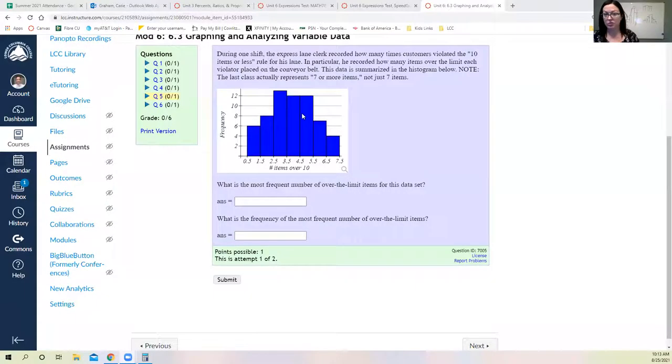So this is question five. I believe, hopefully, you're all seeing the same screen. It says, during one shift, the express lane clerk recorded how many customers violated the 10 items or less rule. He recorded how many items over the limit each violator placed on the conveyor belt. So the last class actually represents seven or more items, not just seven items. So here at half – between half and one and a half means there were one – they were one item over. We had a frequency of six people were one item over. Eight people were two items over. About 13, because it's halfway past that 12 mark. 13 people were three items over.